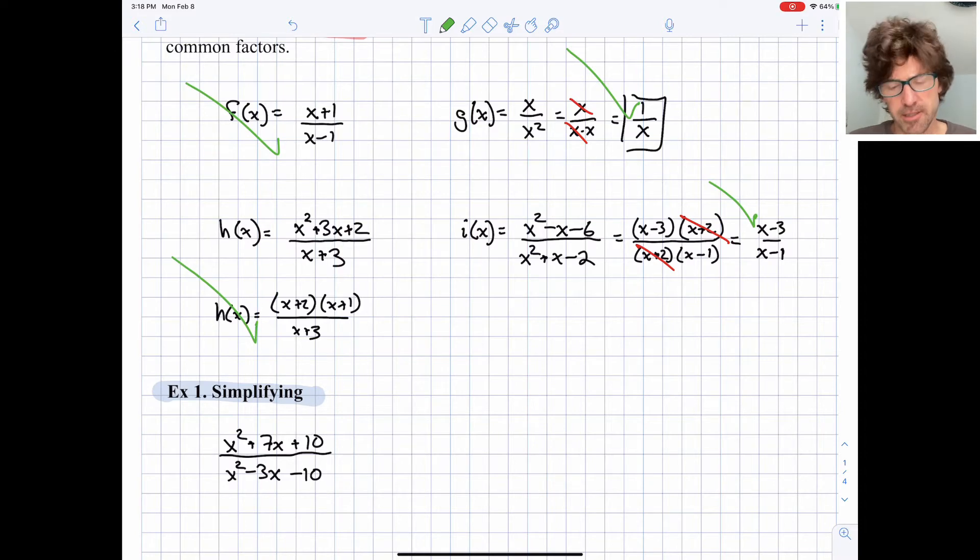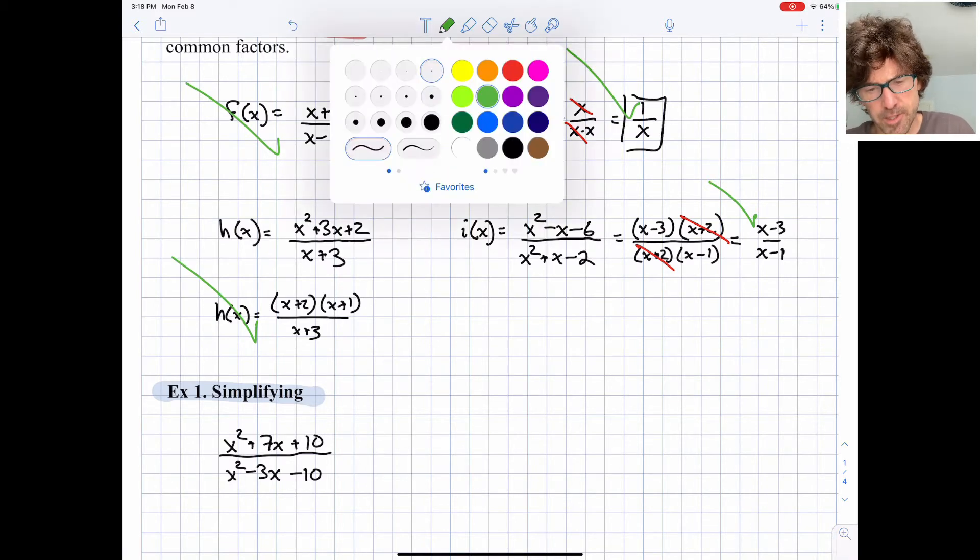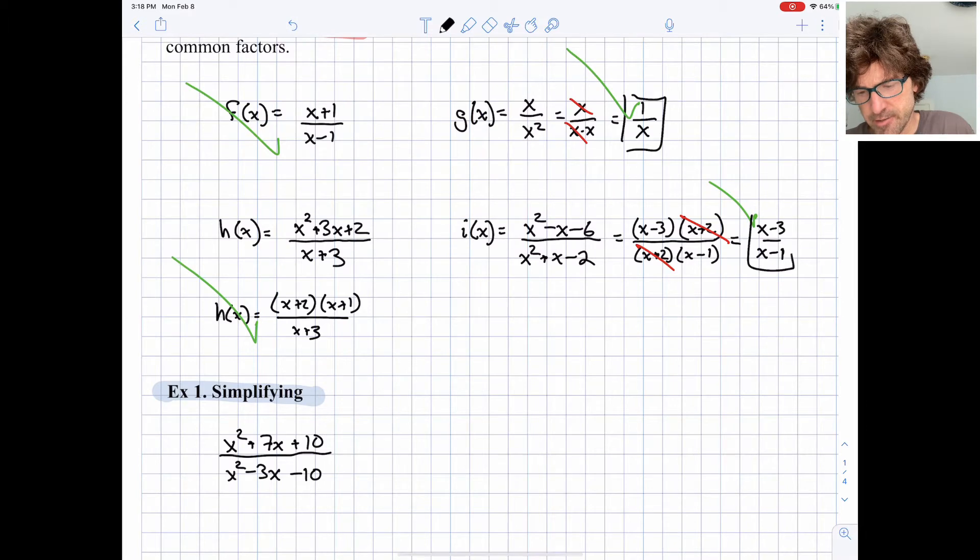When you do your canceling, you need to remember what terms you lost. So for example, for i(x) right here, which we ended up with x minus 3 over x minus 1, I hope you can see that x is not allowed to be 1. 1 is not part of the domain of this function because if it were, then we would be dividing by 0. x is also not allowed to be negative 2.